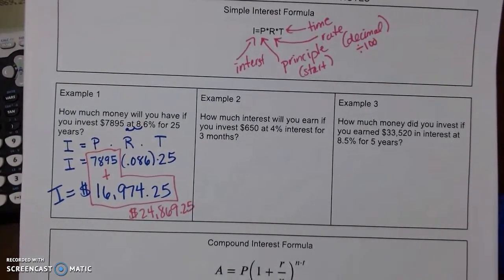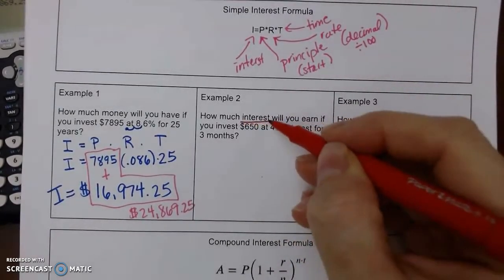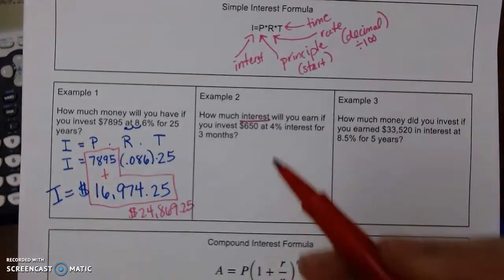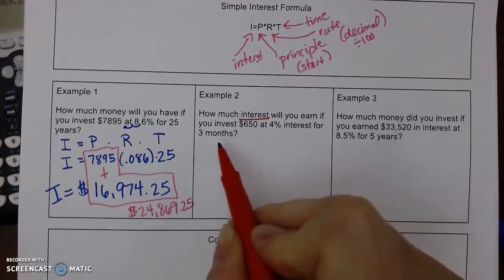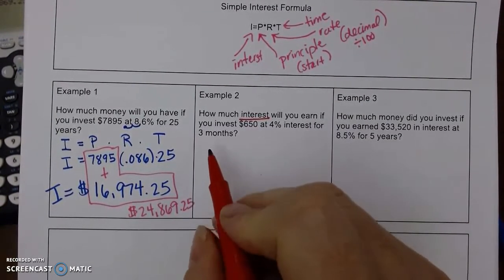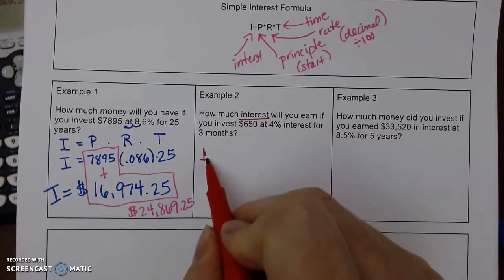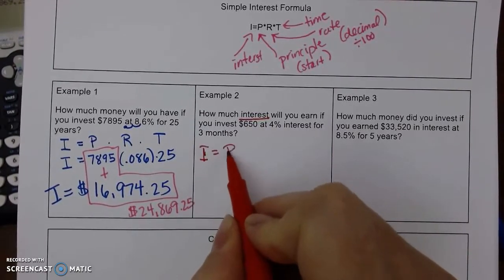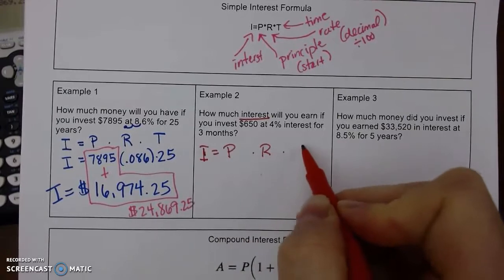Alright, example two. How much interest will we have? See how it's worded differently? We've got $6.50 at 4% for three months. So P, R, T.